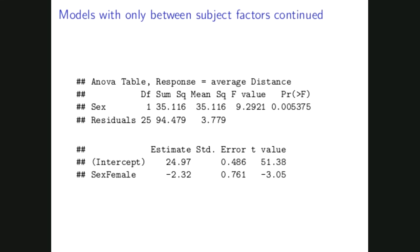When we use this transformed data where distance is averaged per subject, the sample size decreases and we have one row per each subject. Each observation per subject is independent, so now we are satisfying the independence assumption of the fixed effects model, and we can run the fixed effects model on this transformed data.